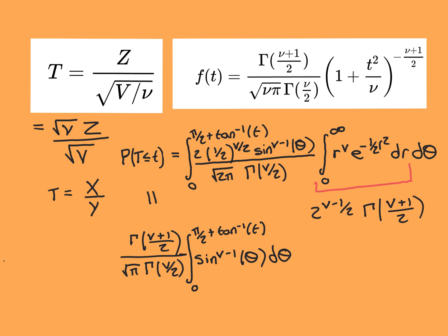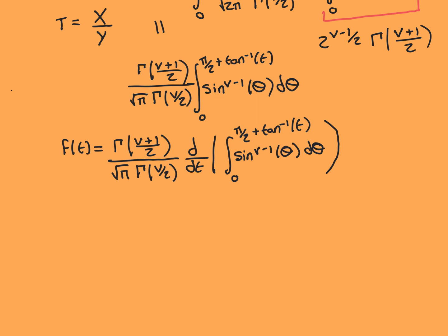Remember, this is the PDF of the t distribution that we're trying to derive. So we're now going to differentiate with respect to little t, and we can then apply the first fundamental theorem of calculus to this. So the PDF of our t distribution is the derivative of the CDF. This is all just a constant, so we can pull it out of the differentiation and we've still got all of that kept exactly the same. Now we've got the derivative with respect to t of the integral from 0 to π/2 + arctan(t) of sin^(ν−1)(θ) dθ, and we apply the first fundamental theorem of calculus.